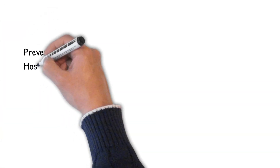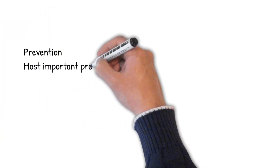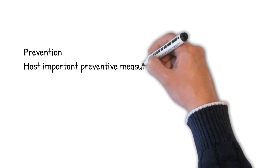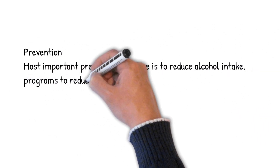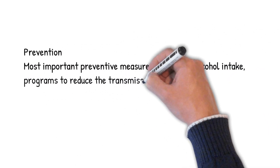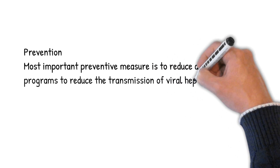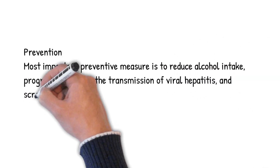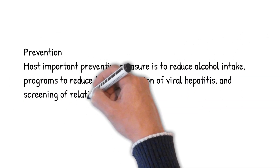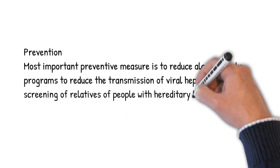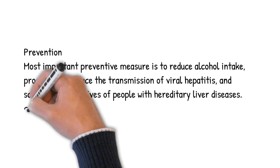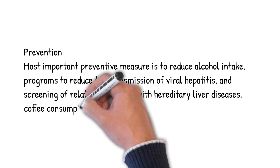Prevention: The most important preventive measure is to reduce alcohol intake. Programs to reduce the transmission of viral hepatitis and screening of relatives of people with hereditary liver diseases are also key. Coffee consumption appears to help protect against cirrhosis.